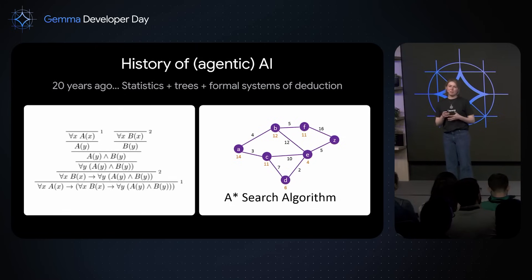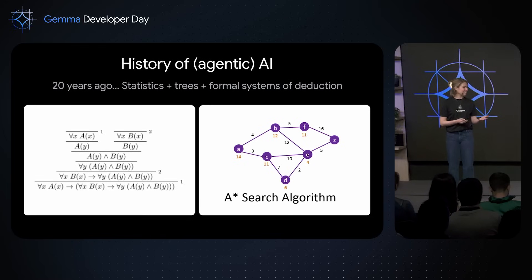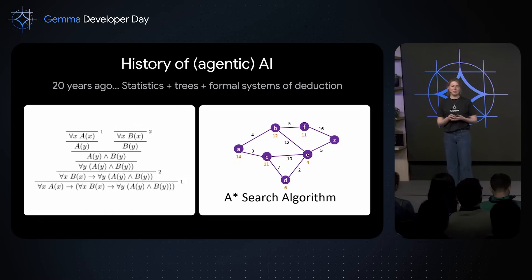Before I dive into how you can build agents using Gemma and some of my favorite use cases, I want to place this in a little bit of context — a very brief history of the last couple of years of AI. About 10 to 20 years ago, if you were building an AI application, you were probably mostly using statistics, logic, decision trees, and search. That's how many of us here got excited about computer science. And while that was a really interesting time with lots of interesting algorithmic developments, the power of these systems was very obviously limited.